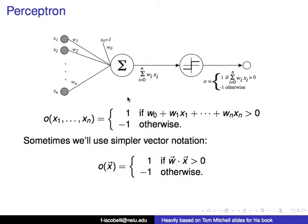The structure of a neuron that we have in the computer, the perceptron, basically works like this. You have a set of values. For example, if you're trying to predict rain, x1 might be the temperature, x2 might be the air pressure, and xn might be the humidity of the air. There are other variables in between.